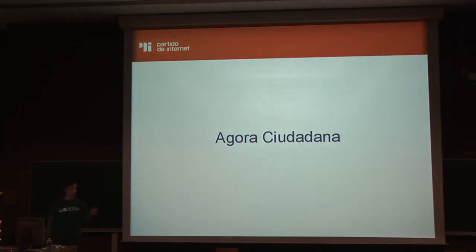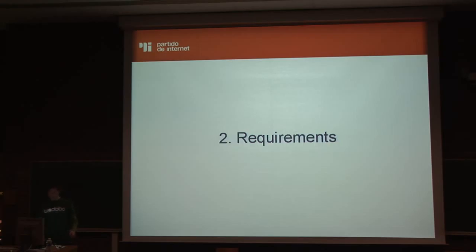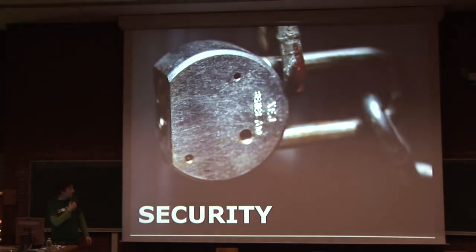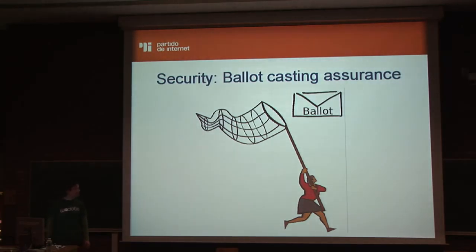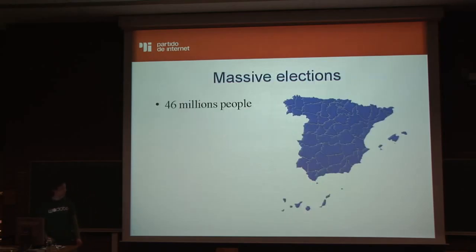Partido Internet created this software, Agro Ciudadana, which has some requirements. The first is security — the voting system needs to be secure, meaning the vote must be secret. You need to be sure that your ballot will be correctly captured.